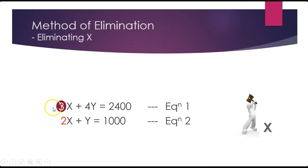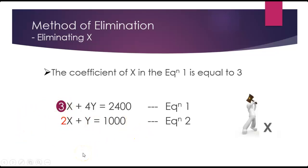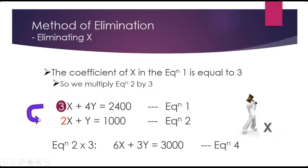Next, we look at the coefficient of x in the first equation, which is 3, and we're going to use that to multiply everything in the second equation. So equation 2 multiplied by 3: 3 times 2 gives us 6x, plus 3 times y gives us 3y. Remember that when we see y, it means really 1y — that's just mathematical notation, we don't write 1y, just like we wouldn't say 1 apple, we simply say an apple. So 3 times 1000 equals 3000, and we'll label this equation 4.